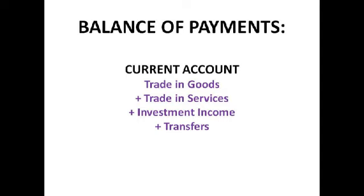Incidentally, we've currently got a balance of trade in goods deficit and a balance of trade in services surplus. Investment income is basically all investment income received take away all of our investment outgoings from past investments. We'll do this in much more detail later — this is just a quick overview of what's in the current account.